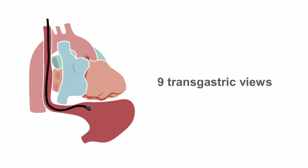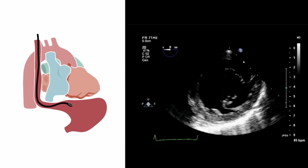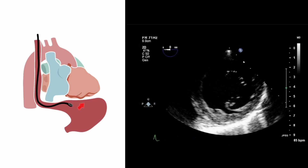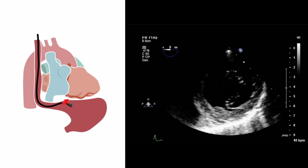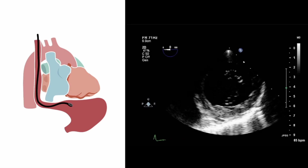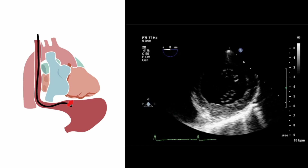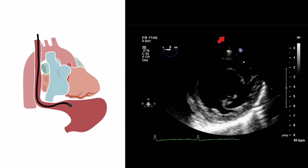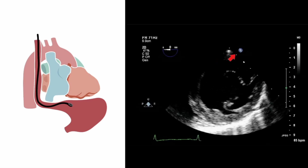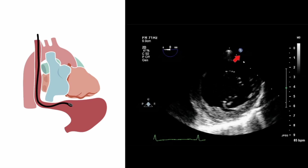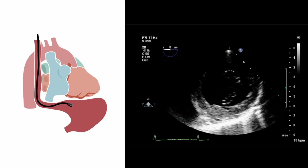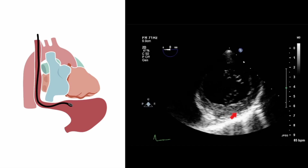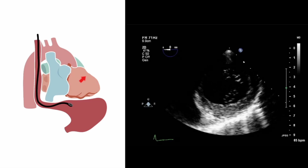As well as the mid-esophageal views, there are also nine different transgastric views. Most of these are obtained with the TEE probe in the standard transgastric position, where we're looking from the stomach up through the patient's diaphragm at the heart. The TEE probe is here on the image, and so in the near field we have the inferior surface of the heart, and in the far field we have the anterior surface.